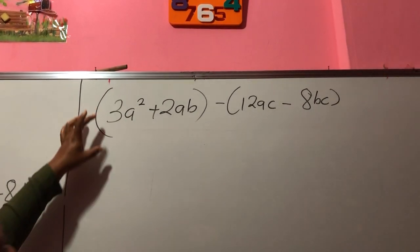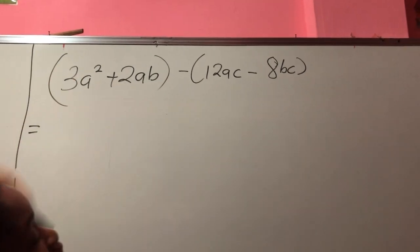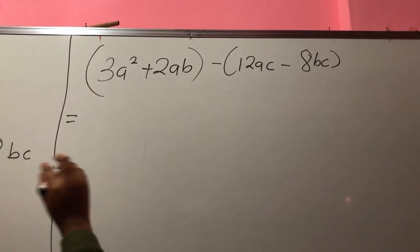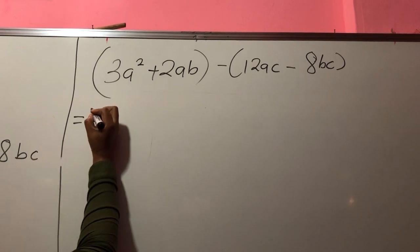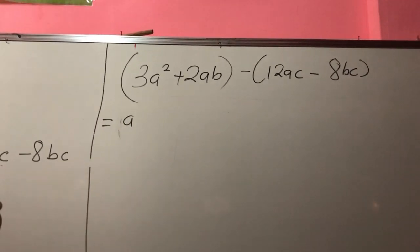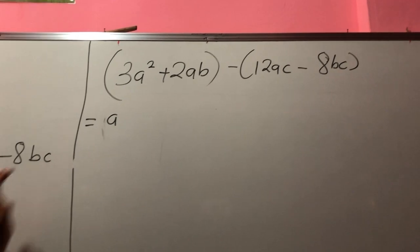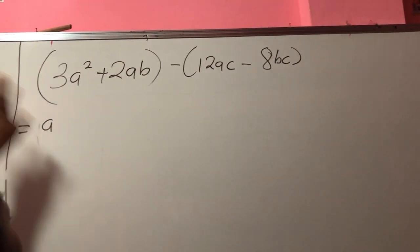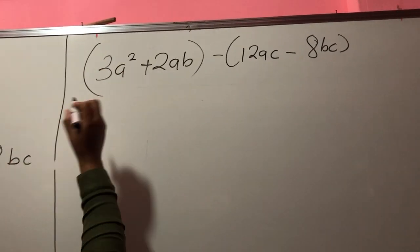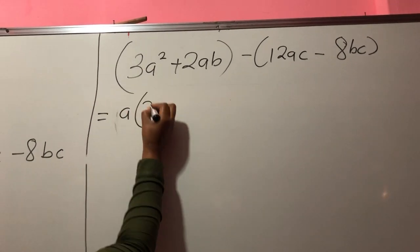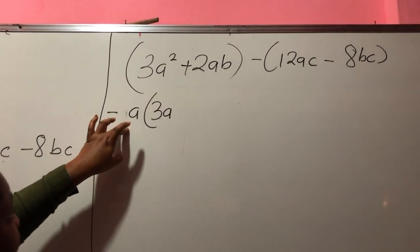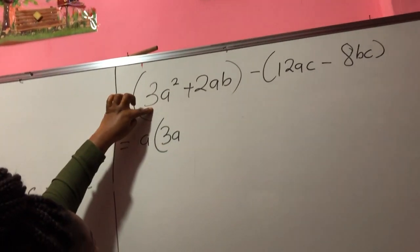Now, what is that common factor? The common factor is 1. And the common variable is A. But it's not right to write 1A, so I cancel the 1 and just put my A there. A is here and A is here. Now, what do we have here? 3A squared. So inside the bracket for this one is 3A. So A times 3A is supposed to give me 3A squared.